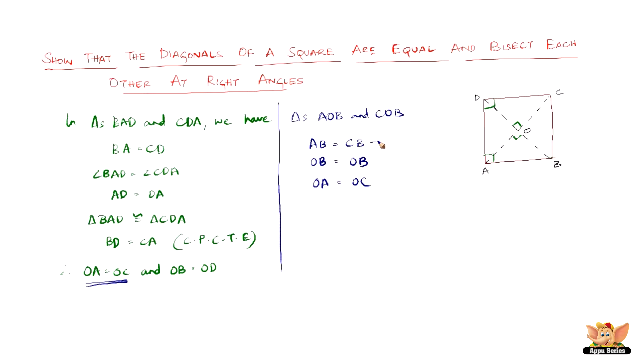So therefore again this is side side and side. By SSS congruence criterion we have triangle AOB congruent to triangle COB. And therefore we have angle AOB equals angle COB. The reason being CPCTC that is corresponding parts of congruent triangles are equal.